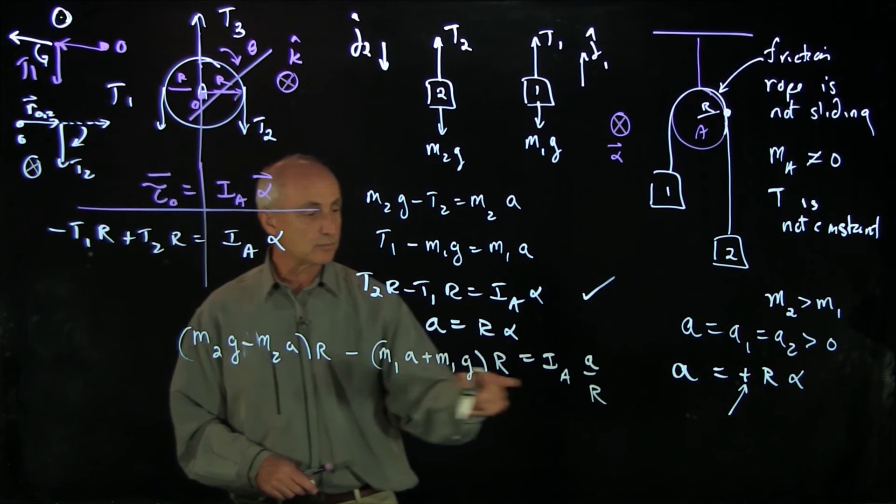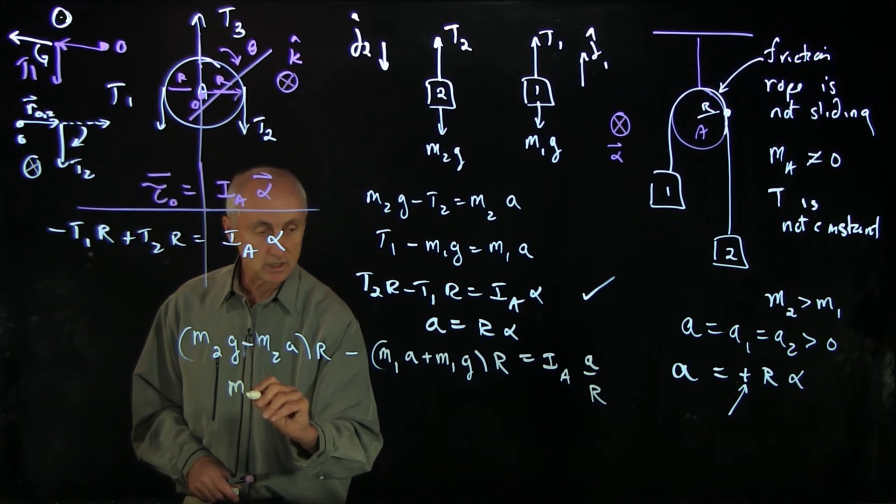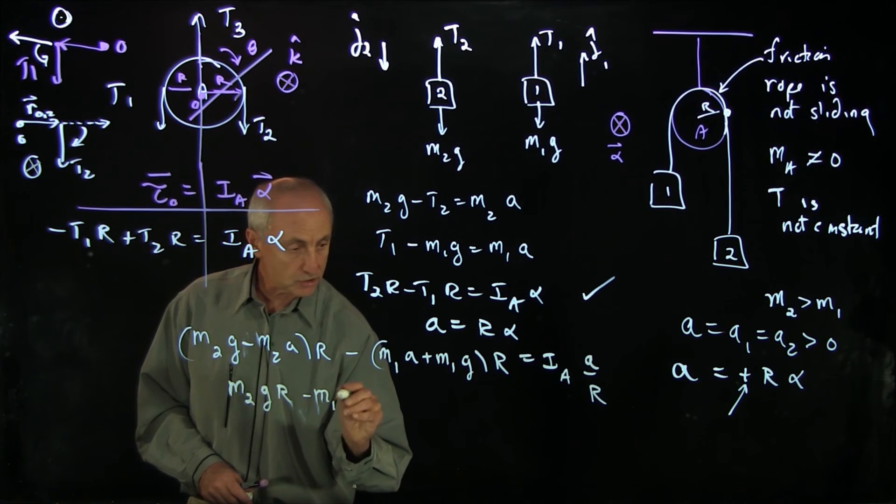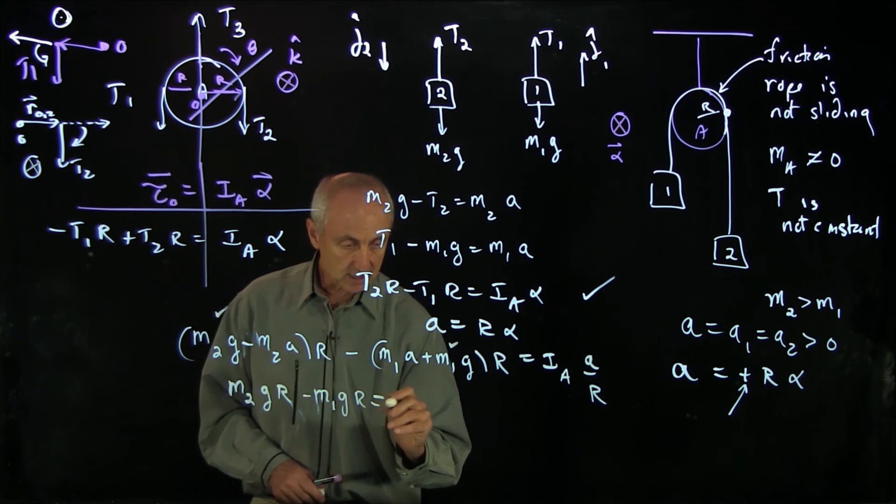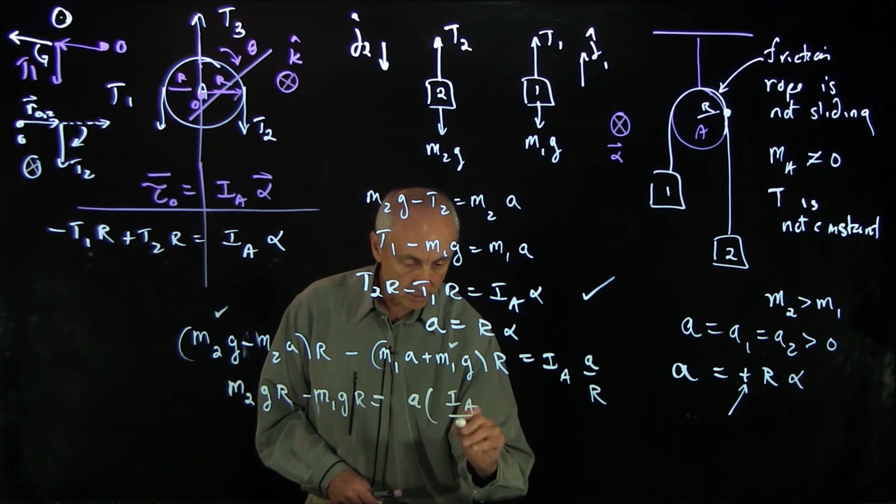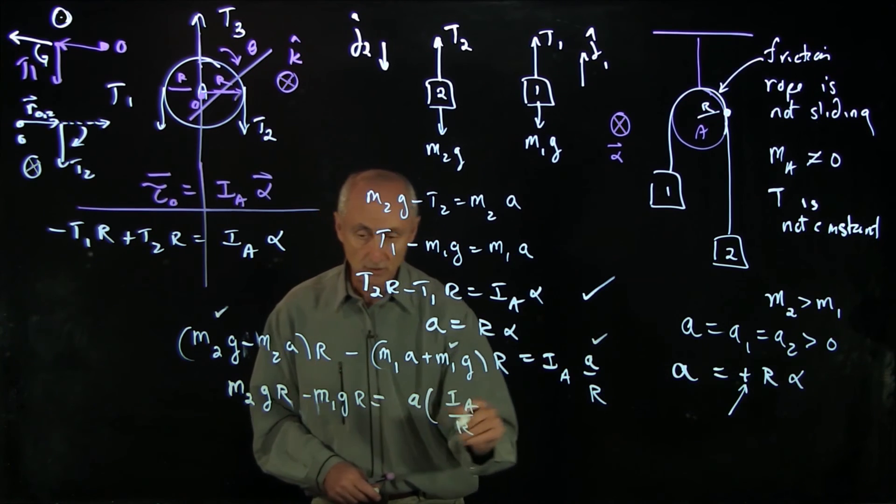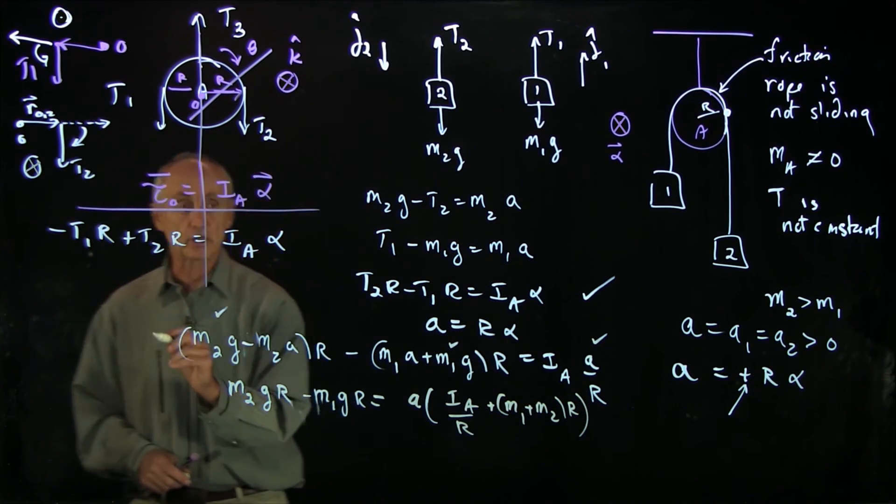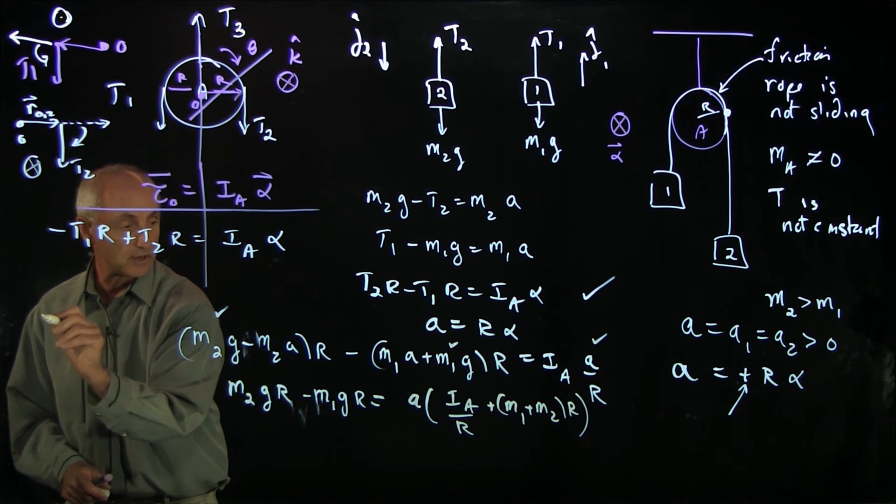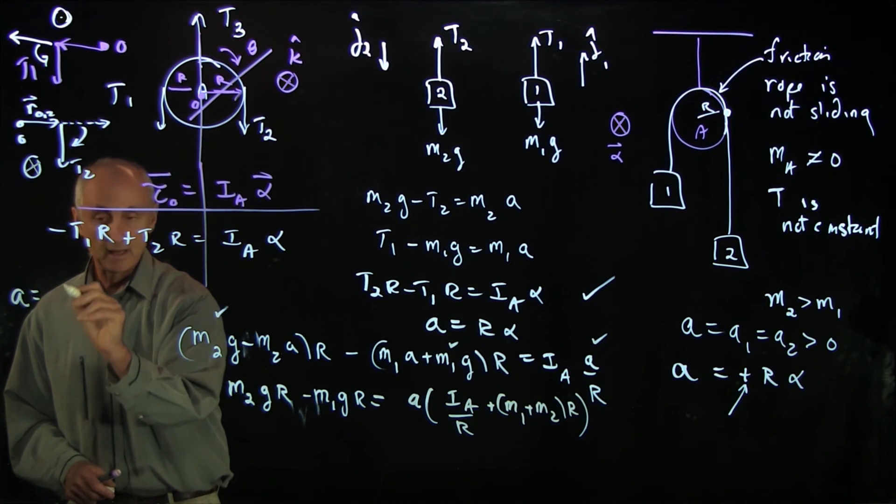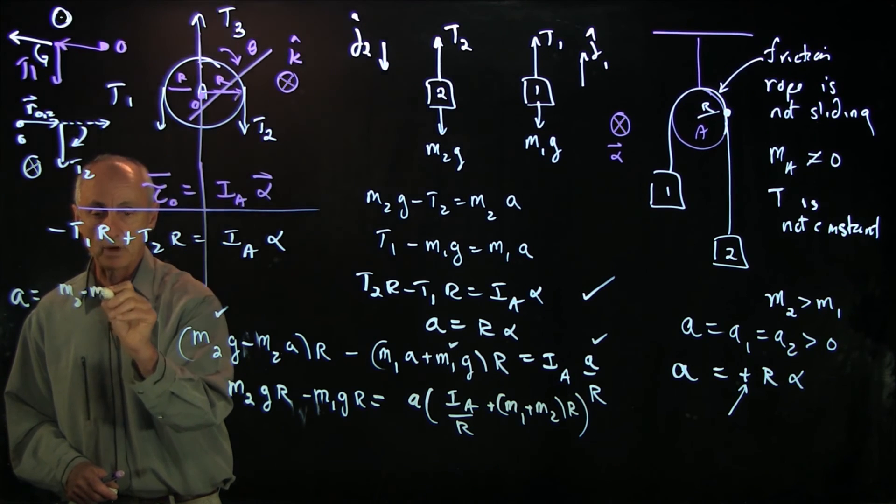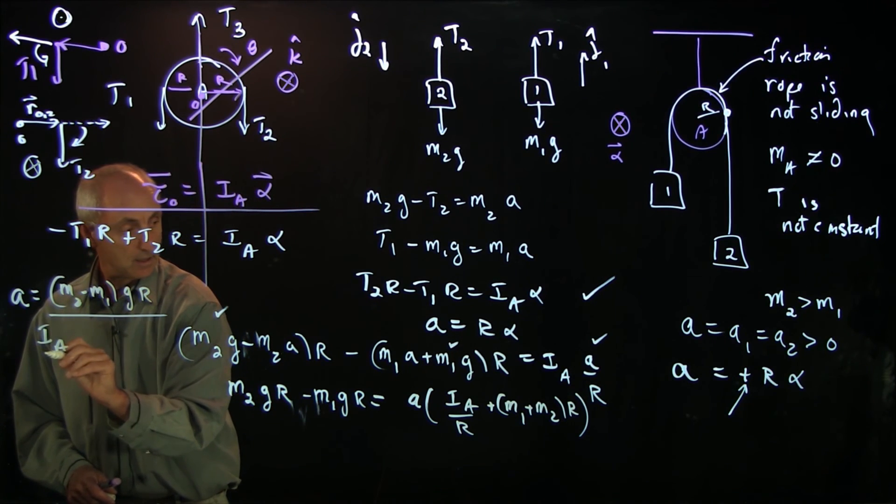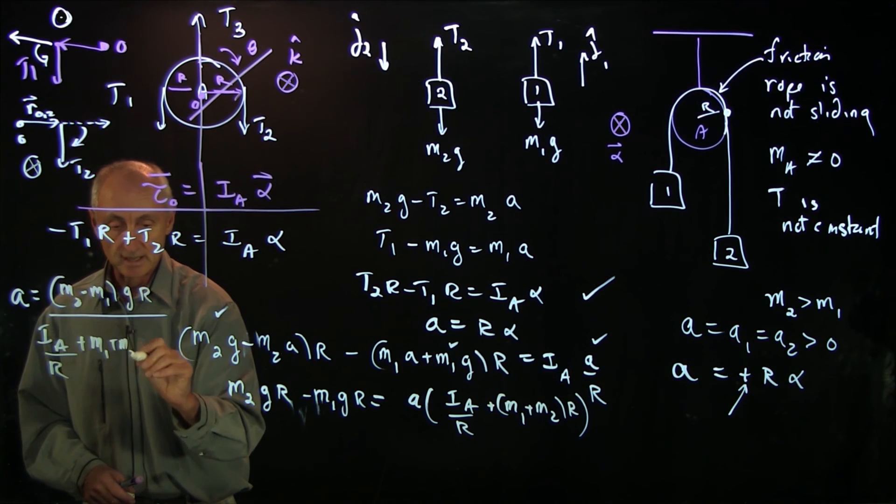I get that T2 is M2g minus M2a times r. T1 is M1a plus M1g times r. And that's equal to I times alpha, which is a over r. I'll now collect all of my a terms. So I get M2gr minus M1gr is equal to a times I over r. I have two plus signs here, so I get M1 plus M2 times r. And I therefore conclude that the acceleration a is equal to M2 minus M1 times gr divided by I over r plus M1 plus M2 times r.